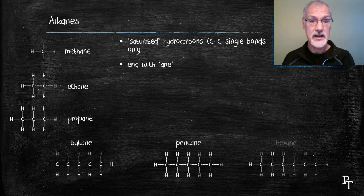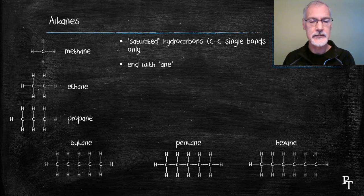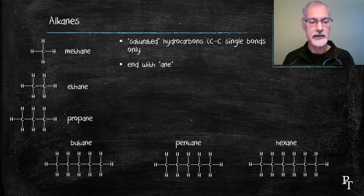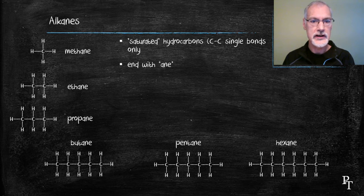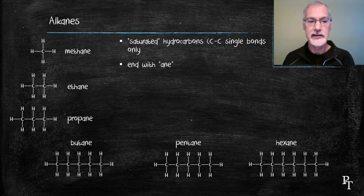As far as naming these chemicals, they all finish with the name A-N-E on the end, or -ane. And the prefix, or the part in front, is used to designate how many carbons are present. So meth will represent one carbon, eth two, pro three, bute four, penta five, and hexa six.